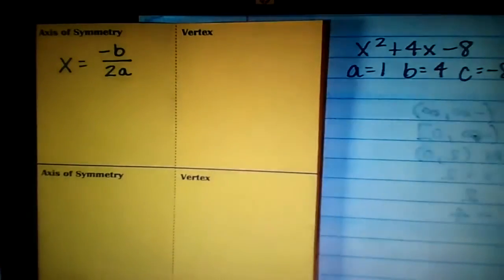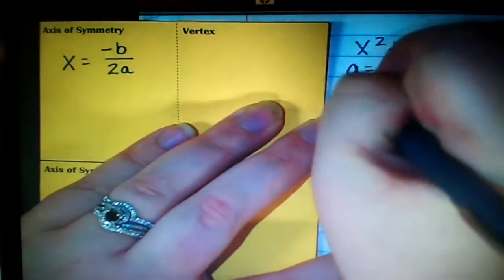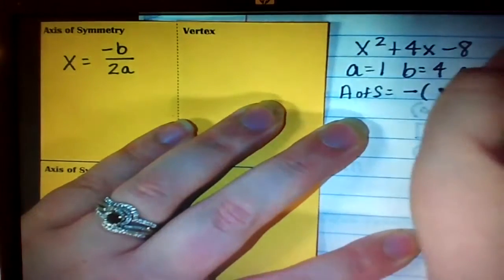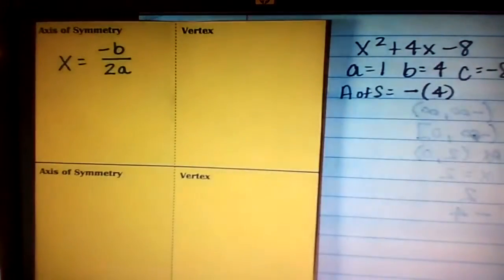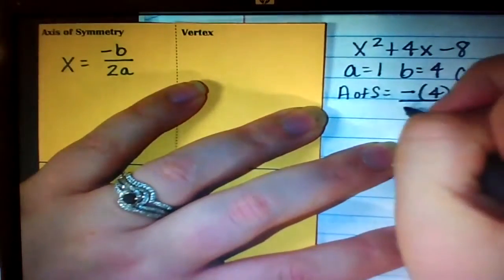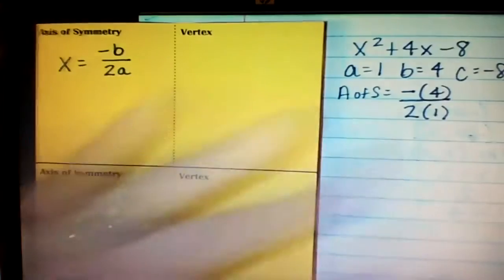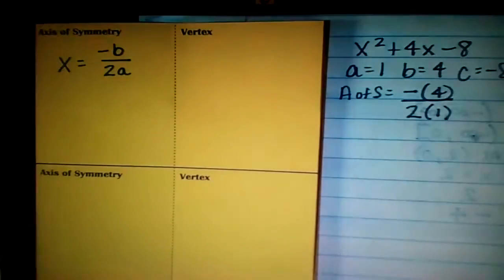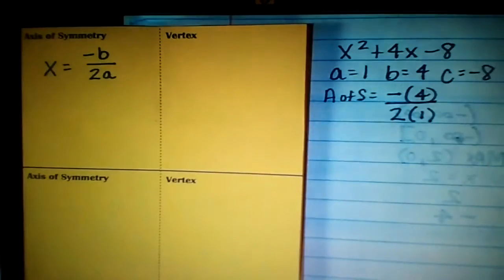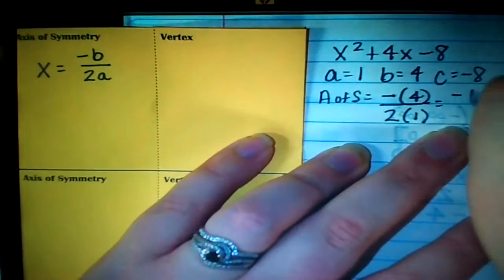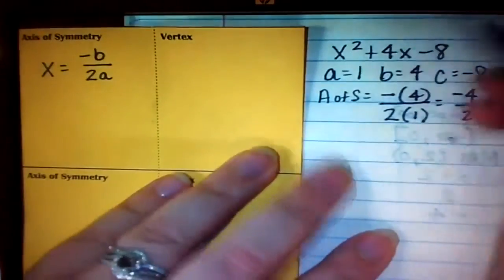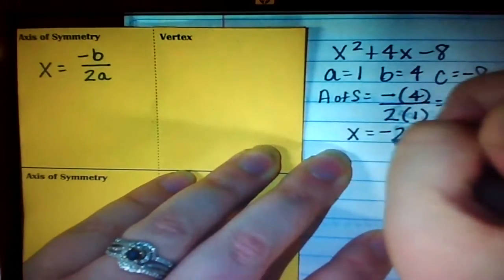So, in this equation, when we solve for your axis of symmetry, it's negative and you plug in your B value, which you've told me was 4. We then divide that by 2 times your A value, which was 1. So, when we go to solve this, it's negative 4 divided by 2, which is negative 2.